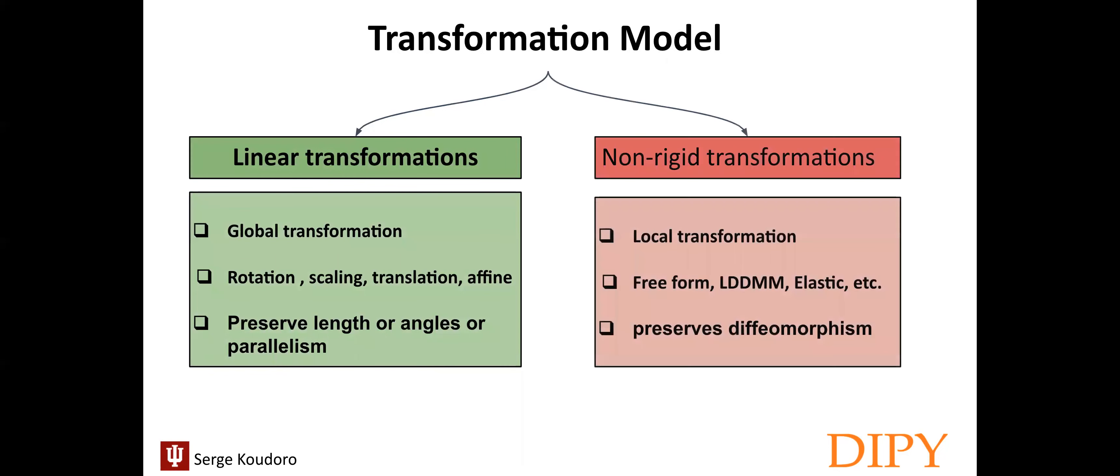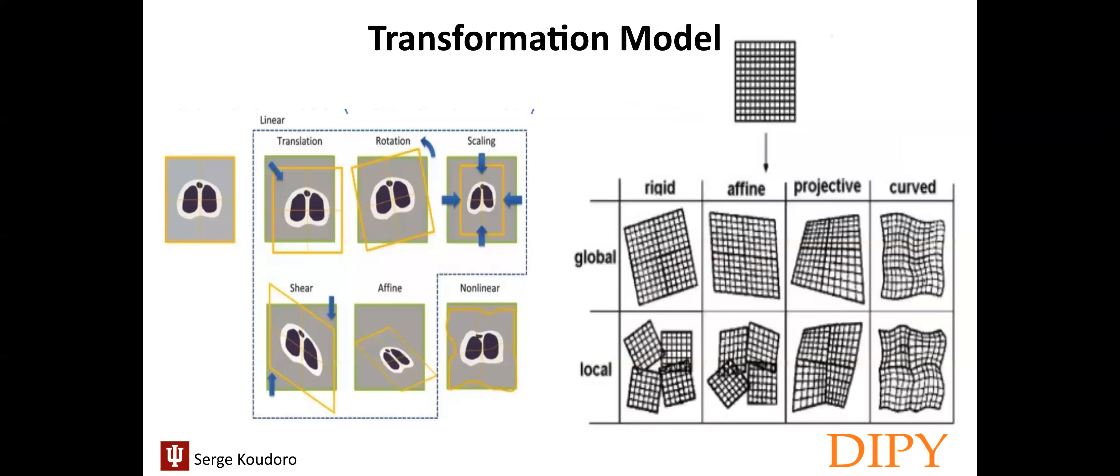The second category is a non-rigid or non-linear transformation, which in this case, now we are working more locally. We have different techniques, like freeform, LDDMM, and elastic. Same, I will talk more about it in the third video. And this time we don't preserve the parallelism, but we preserve the diffeomorphism. So to illustrate that, you can see here in the different figures how the difference between working locally and globally and what it is to preserve the deformed shape or the parallelism.